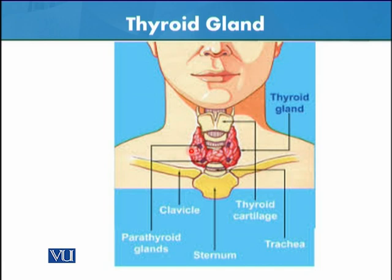It has two lobes. Where the sternum starts, it is on the windpipe, and the thyroid is in the ventral part of the trachea.